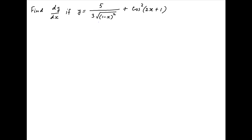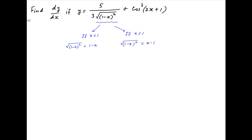The square root of (1-x)² in the first term of the expression for y can take two values: if x is less than 1, then √(1-x)² equals (1-x), and if x is greater than 1, then √(1-x)² equals (x-1). Therefore, y can take two values depending on whether x is less than 1 or greater than 1.